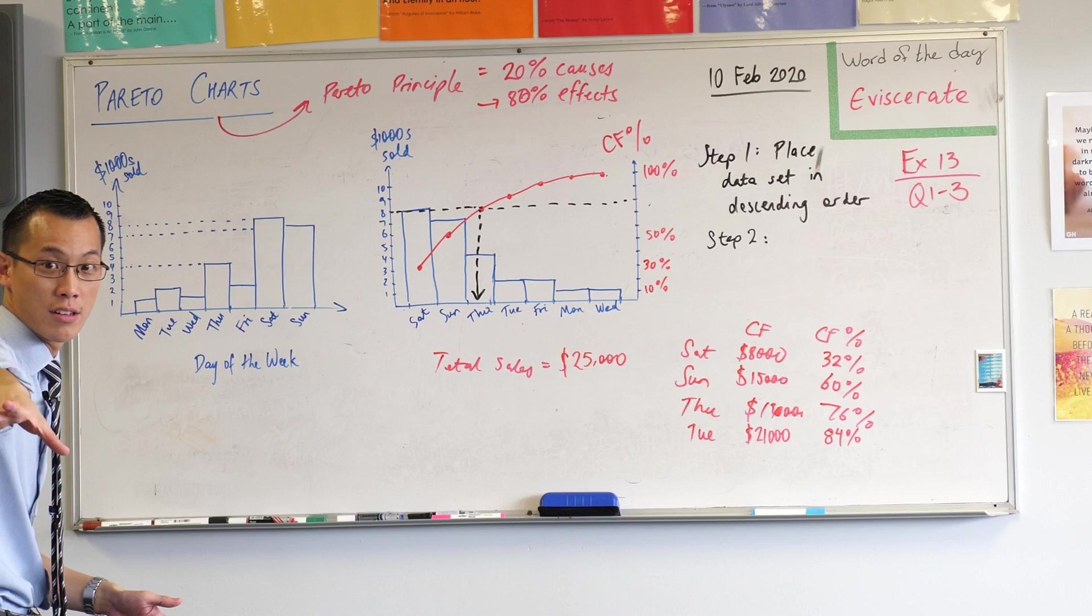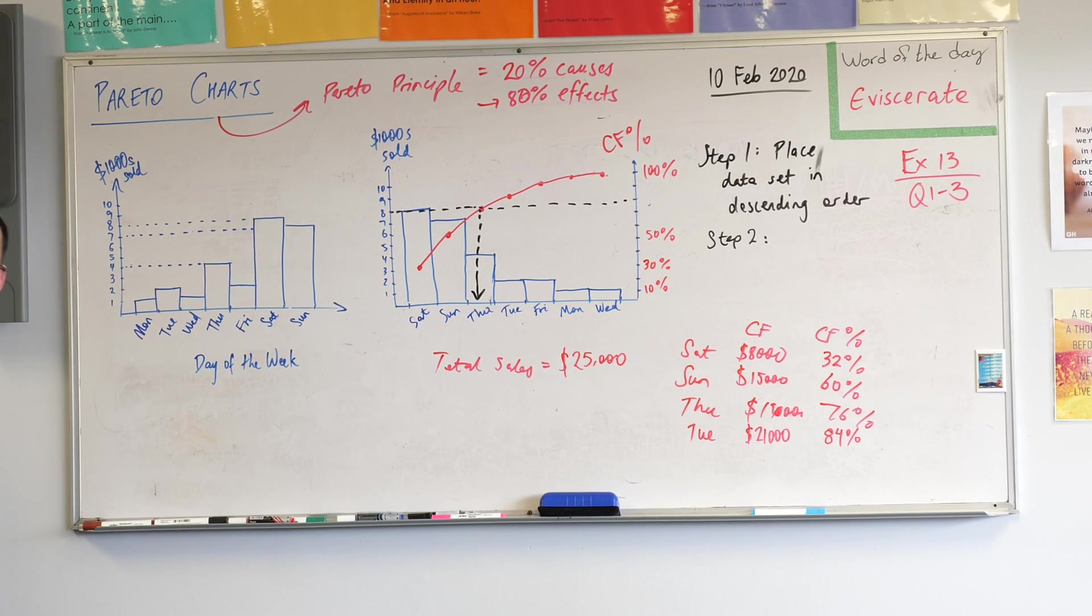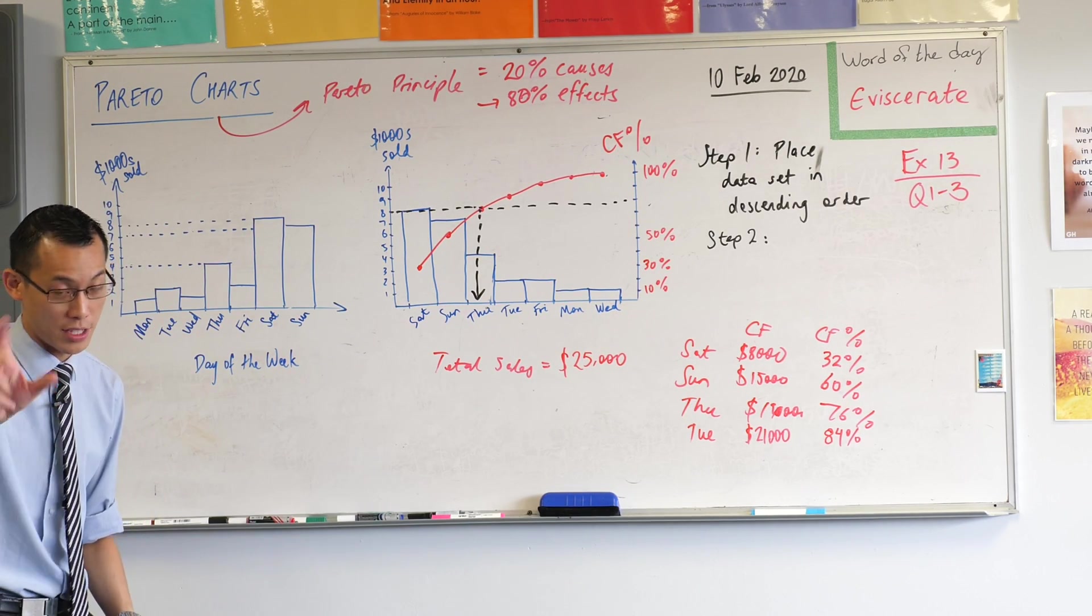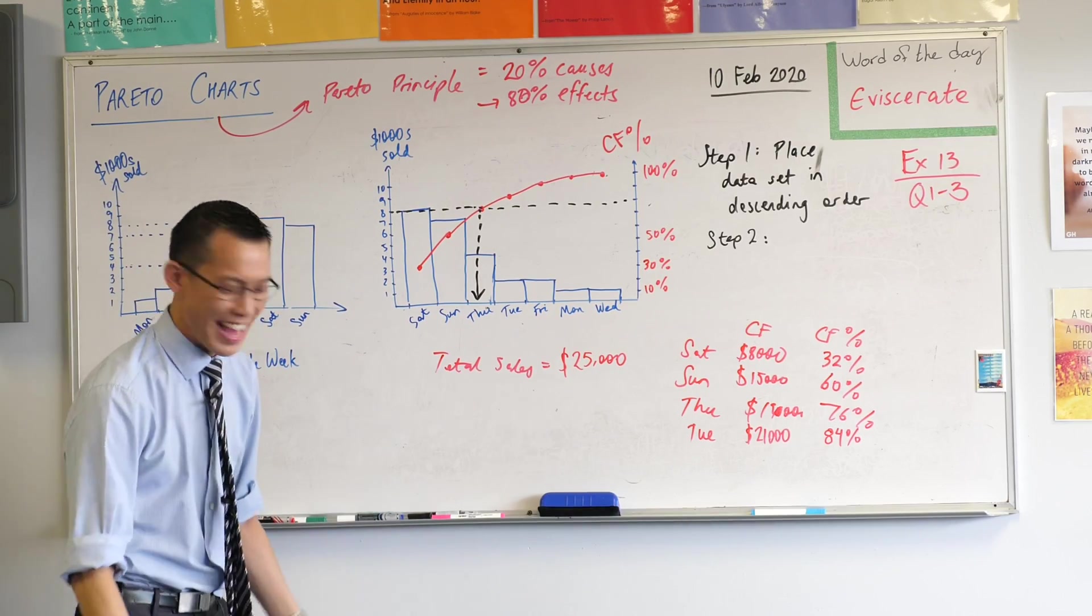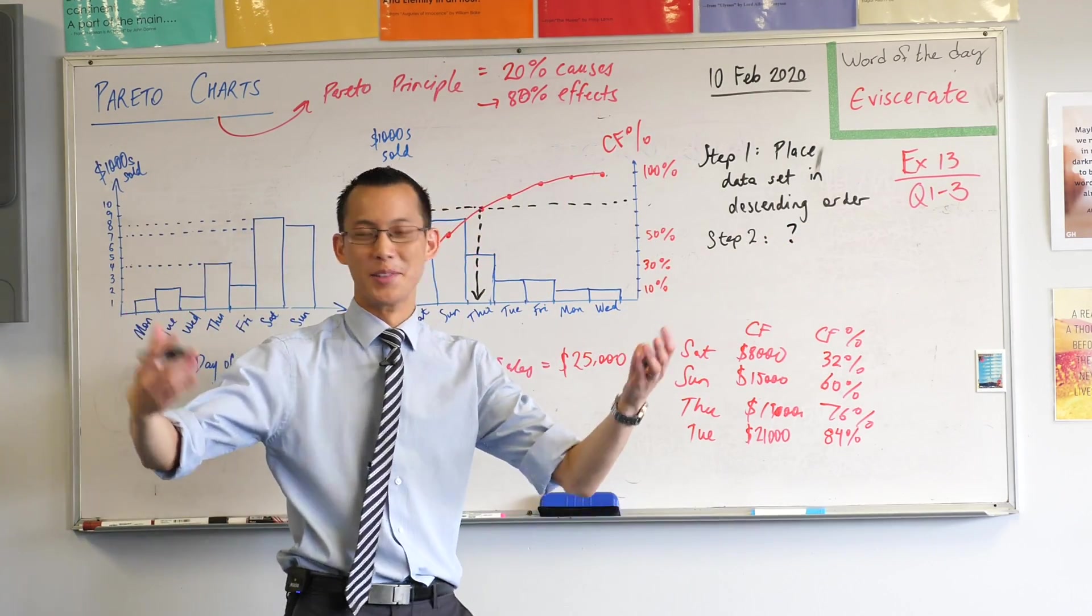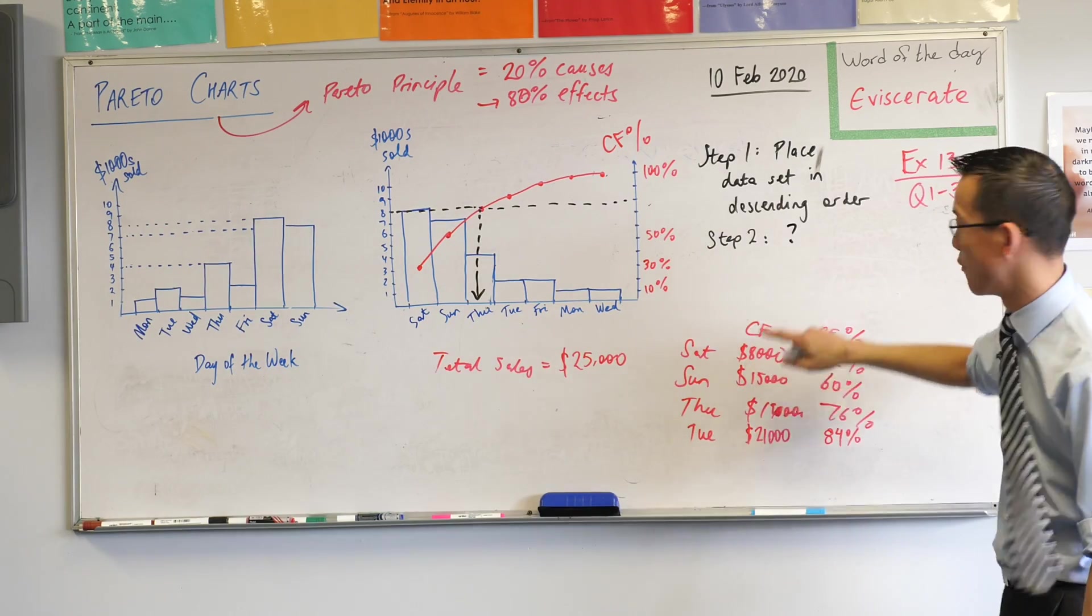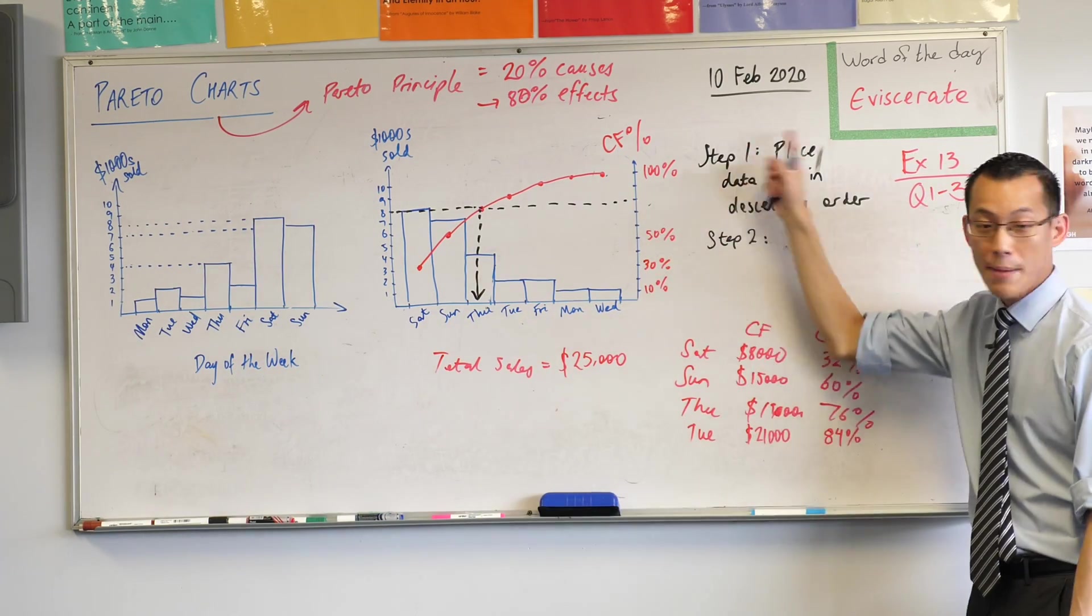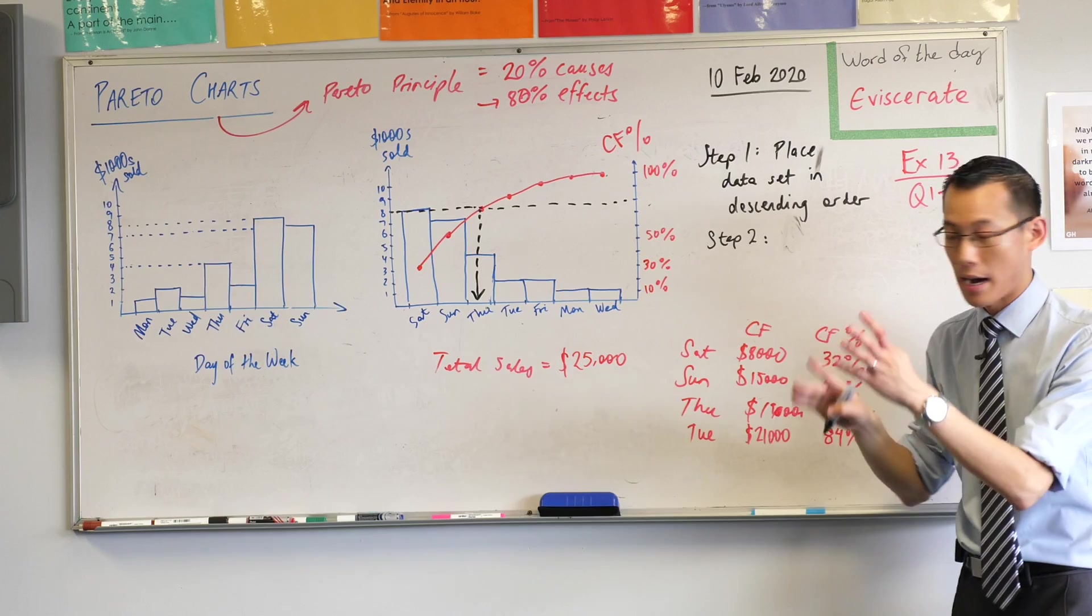First question from Zray. Can you quickly explain how you did the cumulative frequency again? Yes, absolutely. This is the crucial part. So I will say it again. Step one, you place it in order. Do you remember that? Did the bar graph. The second thing we did was we calculated this. Do you remember that? We calculated our total frequency.